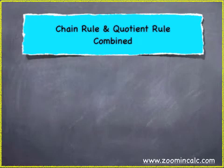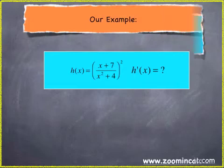Welcome. Today we are going to study chain rule and quotient rule combined. So we're going to begin with this particular example that you see here. And the question is, you're trying to find h prime or the derivative of this function.